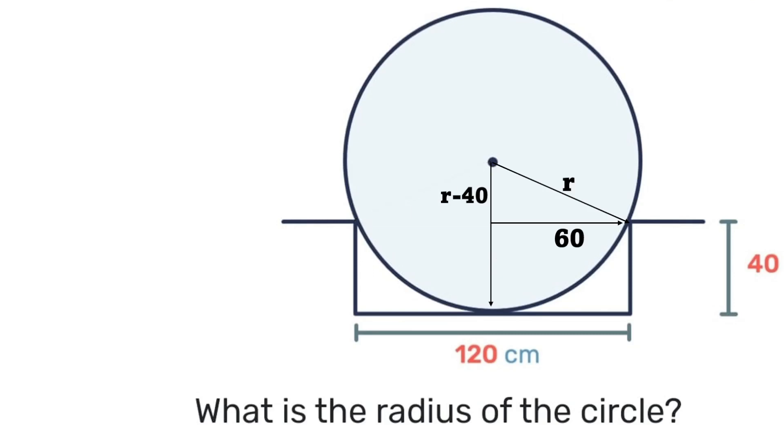So if we focus only on that little right angle triangle there, we can apply Pythagoras theorem: a squared plus b squared is equal to c squared, where the hypotenuse is r and then the values of a and b are 60 and r minus 40 respectively.